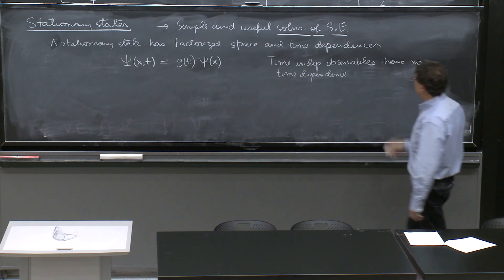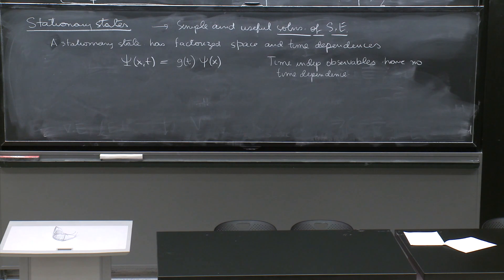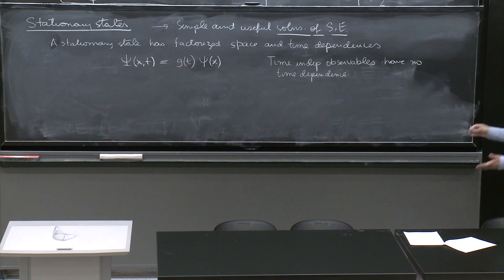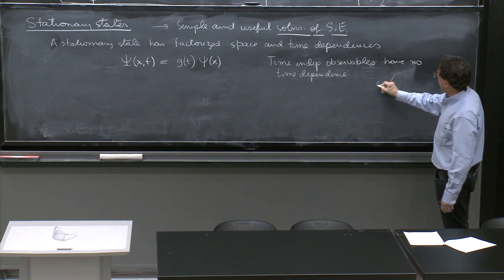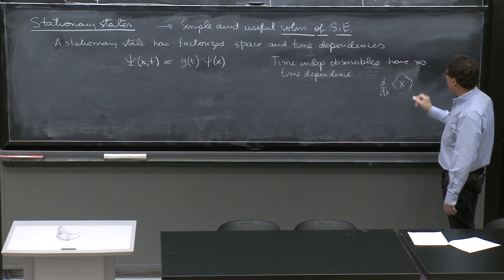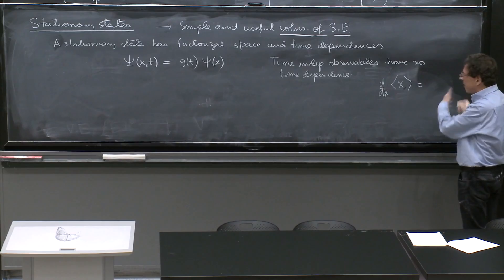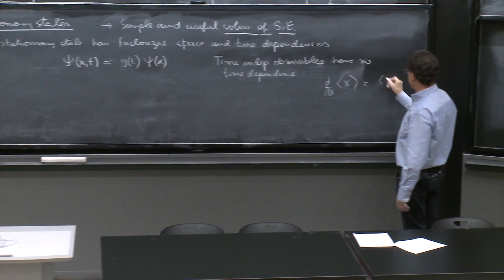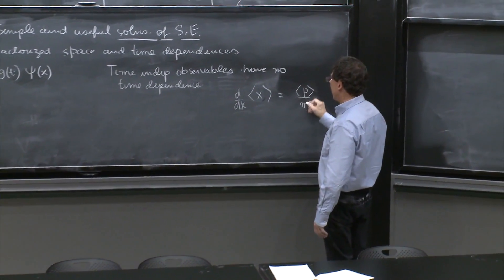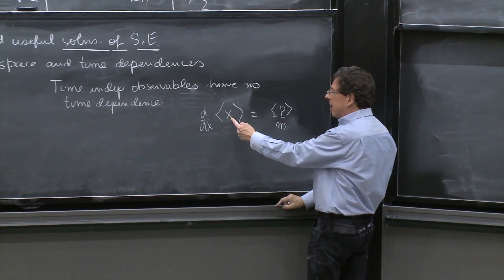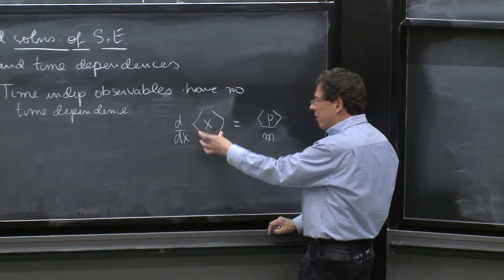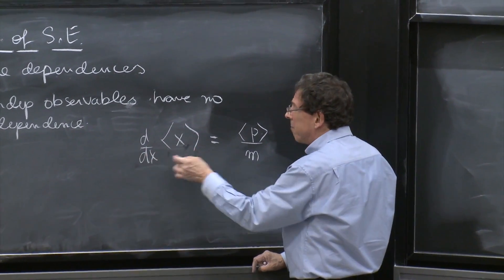It kind of looks silly when you write it like that. Time-independent, you don't have time dependence. But you've seen that d/dt of the expectation value of x is equal to p over m, or something like p over m, the velocity. And here it is, a time-independent observable that does have time dependence.